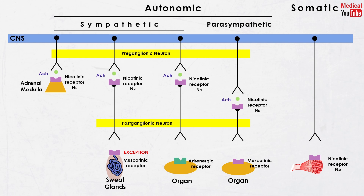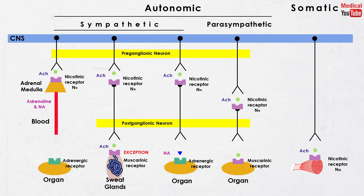So we know that acetylcholine exists at all ganglia, somatic nerve endings, parasympathetic nerve endings, and sympathetic nerve endings innervating sweat glands. Noradrenaline exists at the nerve endings of sympathetic neurons and is excreted along with adrenaline from the adrenal medulla directly into the blood.